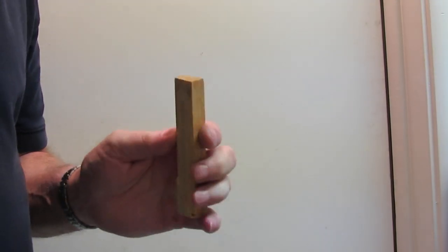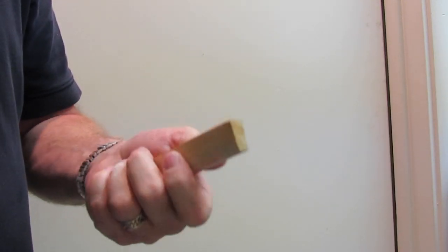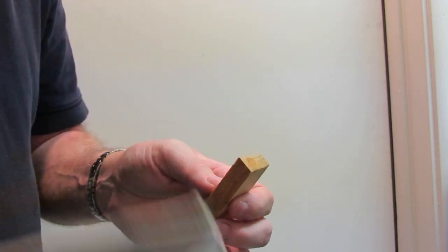This is radius corners made simple. I've got just a chunk of wood here. I'm going to put a radius on the corner just using this.